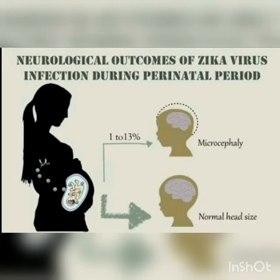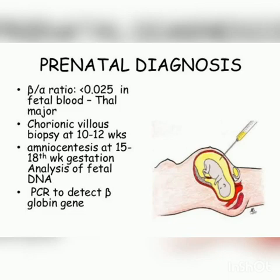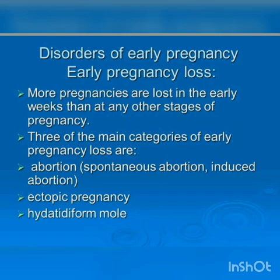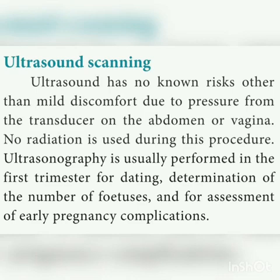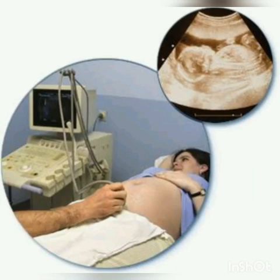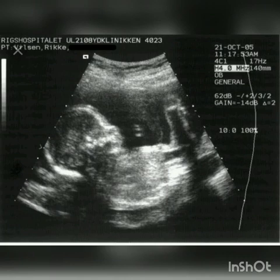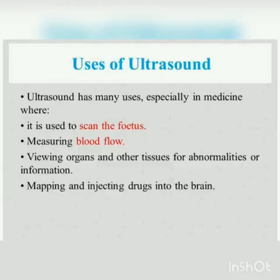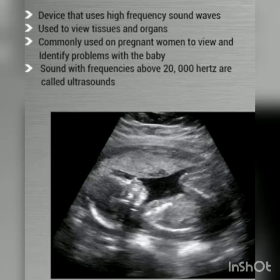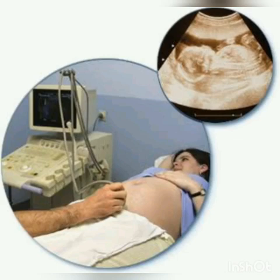After the mother is pregnant, how do we detect fetal disorders during early pregnancy? There are several detection methods. Ultrasound scanning has no risk other than mild discomfort due to pressure from the transducer used on the abdomen. Radiation is not used, so it will not affect the child. Ultrasound is usually performed in the first trimester for dating — determining when the child is born and the number of fetuses — and for assessment of early pregnancies.